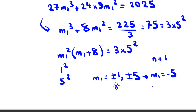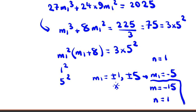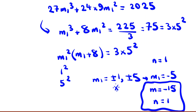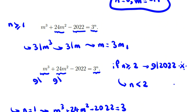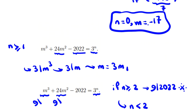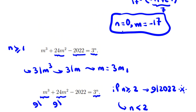Since m = 3m₁ and m₁ = −5, we get m = −15. And n = 1. So our second answer is m = −15, n = 1. In summary, the two solutions are: (m, n) = (−17, 0) and (m, n) = (−15, 1).